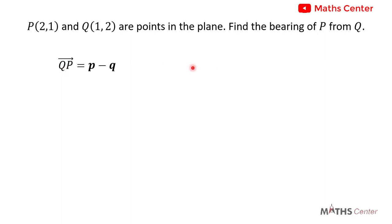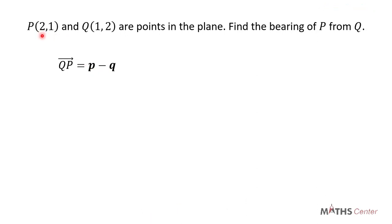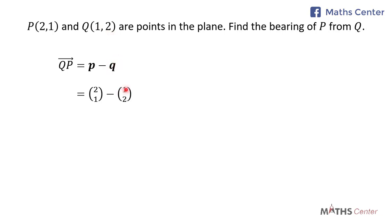The direction of the vector KP will give us the bearing of point P from point K. The vector KP equals the position vector of P minus the position vector of K. The components of the position vector P are the coordinates of point P, which are (2, 1), and the components of the position vector K are the coordinates of point K, which are (1, 2).